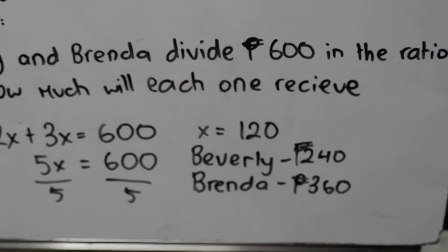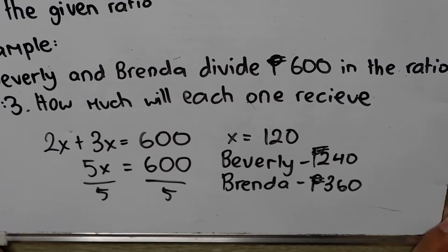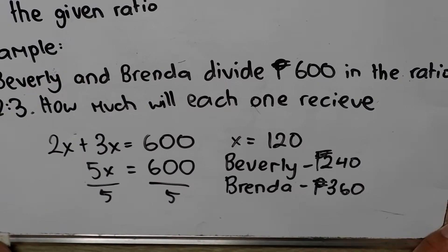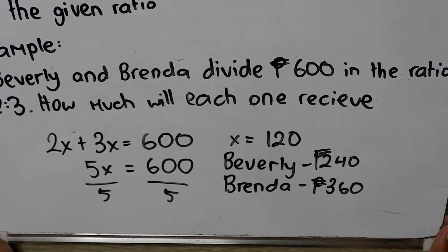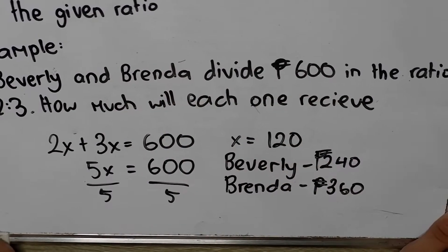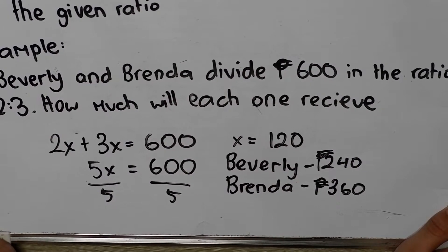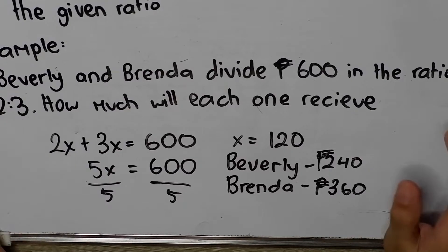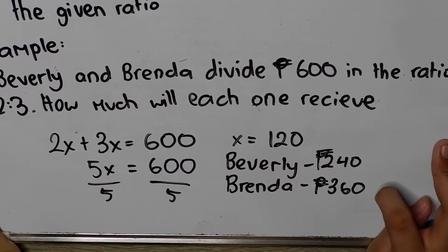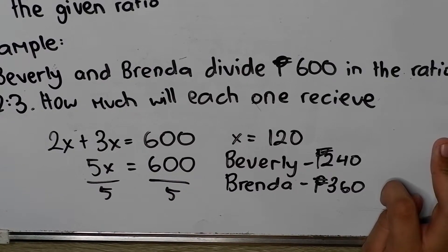But, we are still not done yet because Beverly gets 2 shares of x and Brenda will get 3x. 3x meaning 3 shares of those 120. So, Beverly will get 240 pesos while Brenda will get 360 pesos.